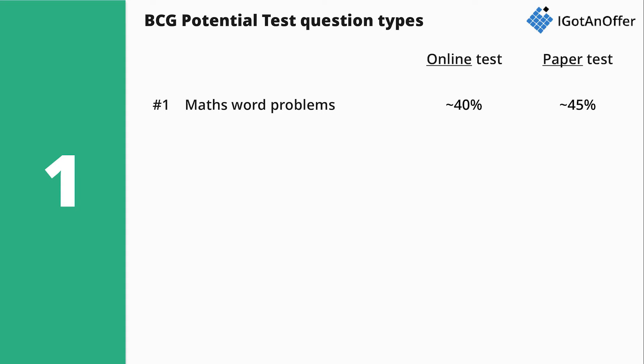The first type of question is maths word problems. They are the most frequent type of question in the test and account for 40% and 45% of questions in the online and paper tests respectively.